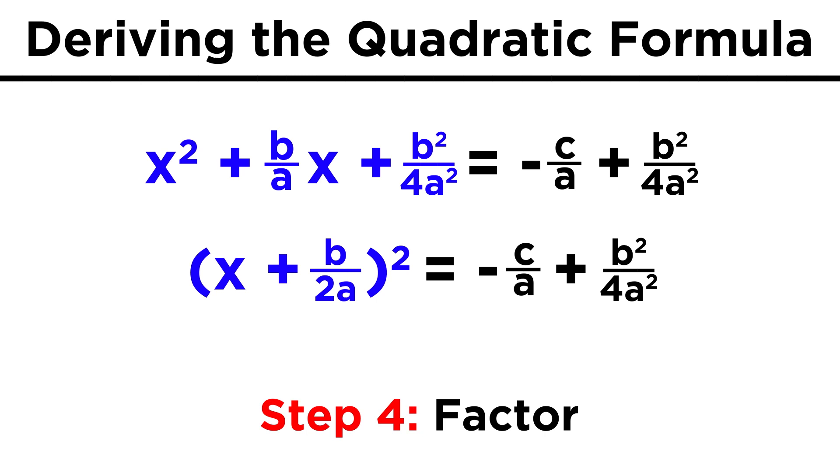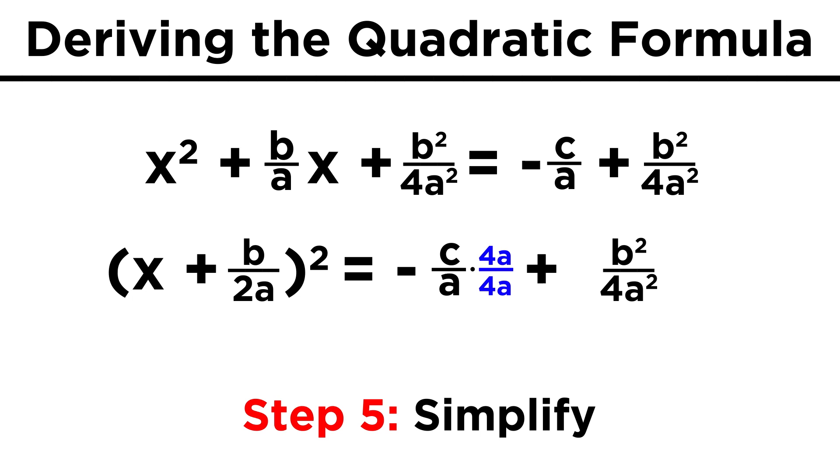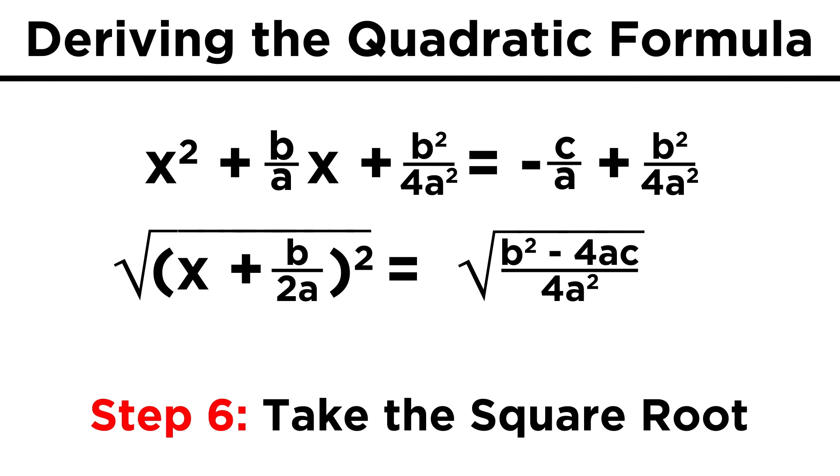Now on the left, we have a perfect square, so let's factor it and get x plus b over two a quantity squared, while on the right, we can multiply c over a by four a over four a, so that we end up with the same denominator for both fractions, allowing us to combine them into one fraction.